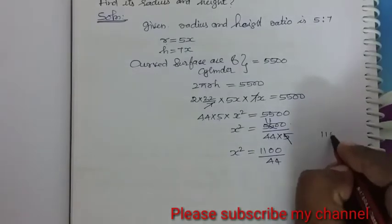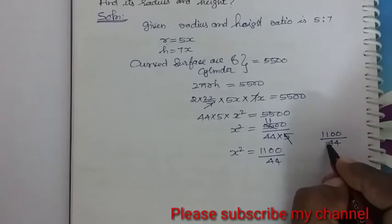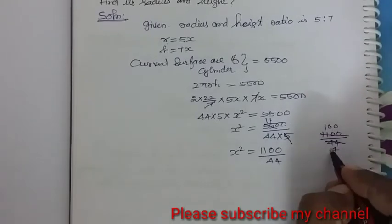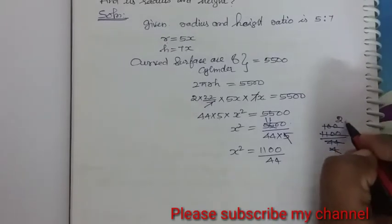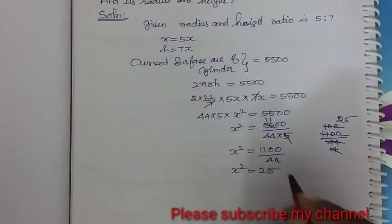So 1,100 divided by 44 cancel. 11th table, 4 times here, 1 times. So this 4 here in this 100, 25 times. So x squared is equal to 25.